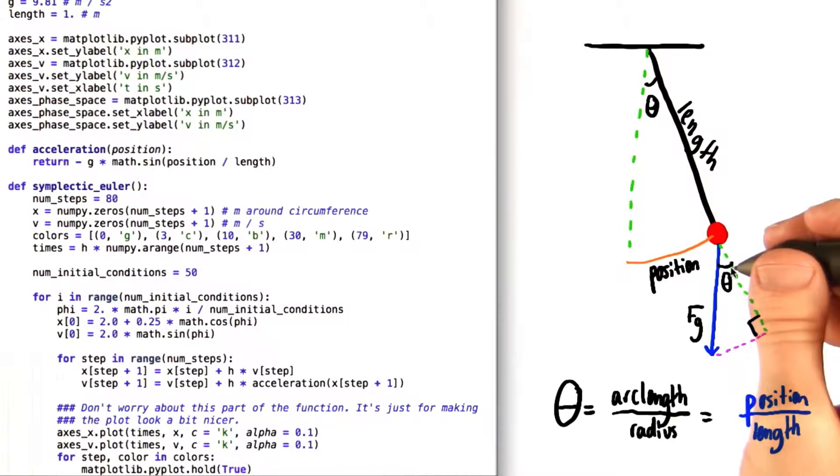Now if we call this angle theta right here, then we can figure out the length of this pink component by just saying that it is equal to the length of the resultant vector times the sine of theta.